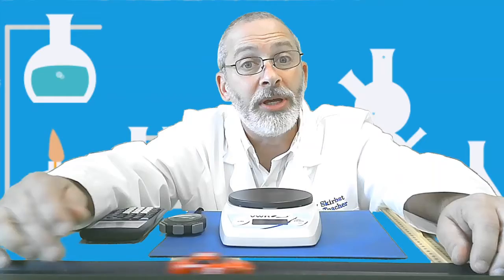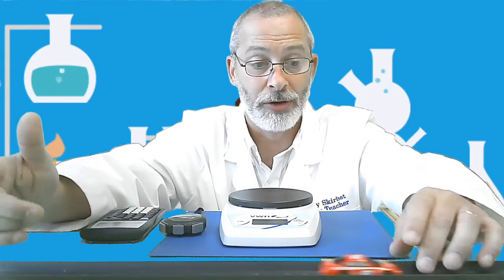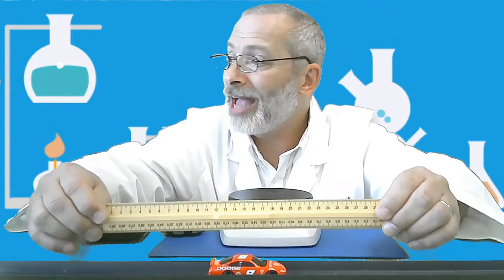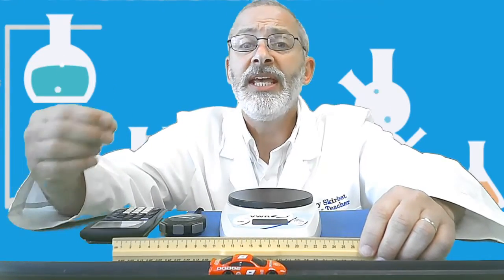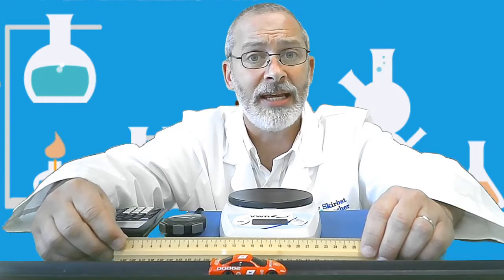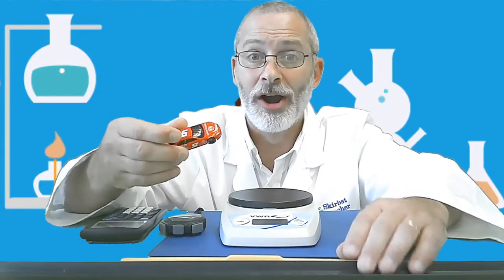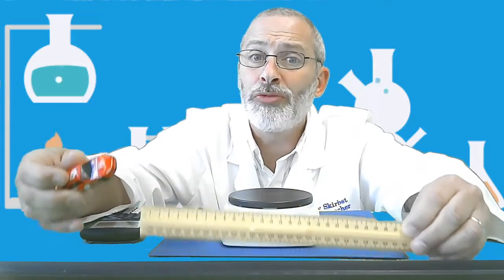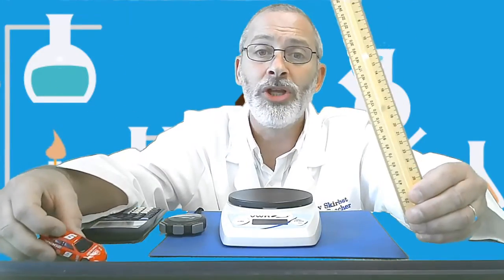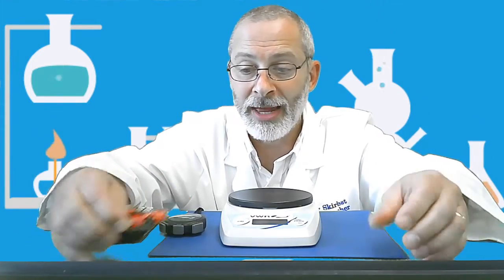Our vehicle is going to ride along a track four times at four different velocities. I have already measured the distance of our track using a ruler, and the distance is 2 meters. Write that down in your data table as well. The mass of the car and the distance of the track are going to remain constant — they will not change. We're going to use the same car and the same track distance each time.